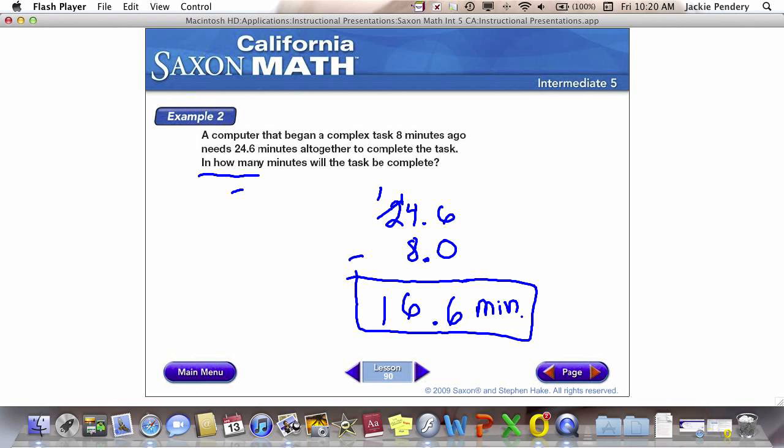Okay? Notice again, even when subtracting, my decimal points are lined up in a nice, neat column so that my tenths place, my ones place, and my tens place are all lined up together. Okay? Alright, example 3.